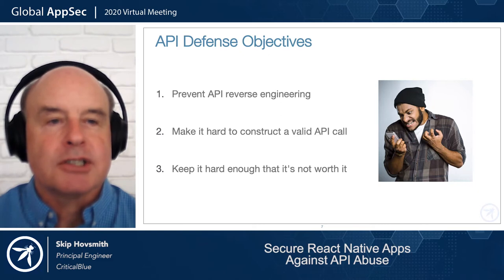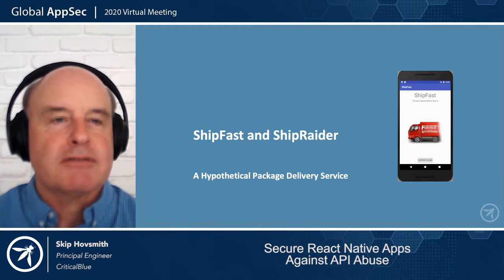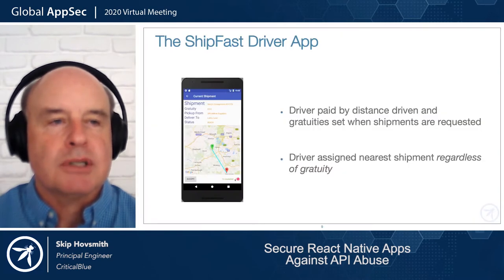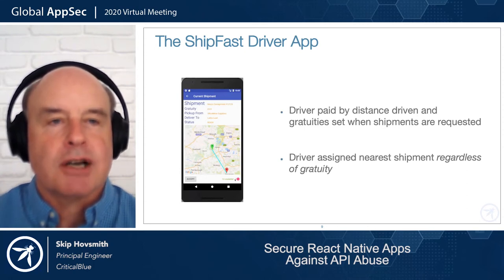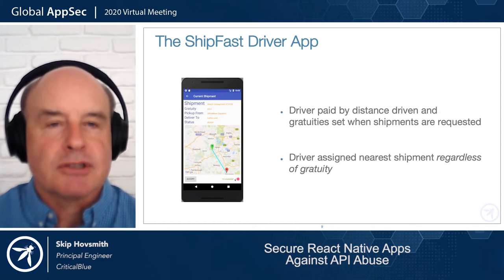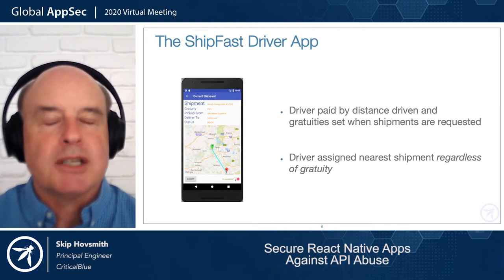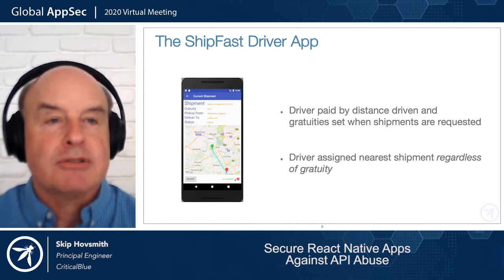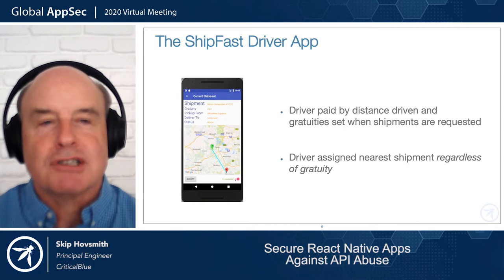We're going to use the ShipFast application and ShipRaider — the service attacking it — for our exploits today. ShipFast is a React Native driver app where a driver indicates they're available to pick up packages. The ShipFast service provides the nearest pickup point; the driver goes there, picks it up, and delivers it. The driver is paid by distance or time. Unusually, every shipment has a gratuity set by the shipper when placing the order — some high, some zero — and drivers don't get to choose.